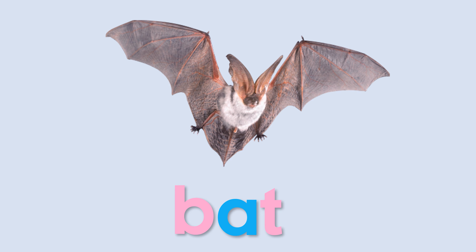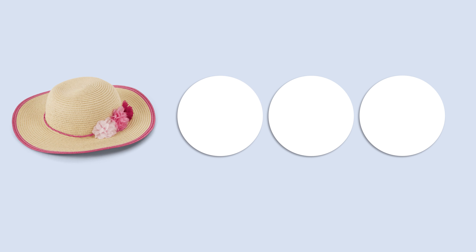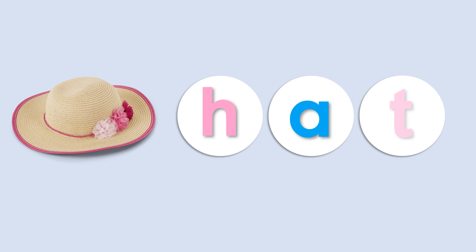Let's go to the next word. This is a hat. When I say hat, what's the first sound you can hear? Hat, hat. Yes, h sound. The second sound is — hat, hat — yes, the second sound is a. And what's the last sound of the word hat? Hat, hat. Yes, t sound. H, a, t — hat.